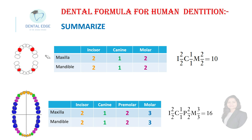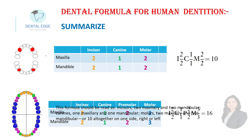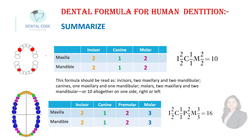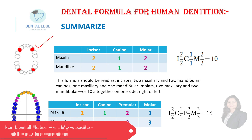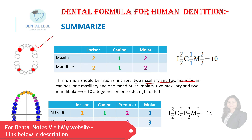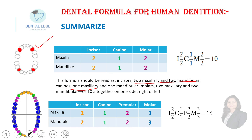One more thing — how do we read this formula? For the primary dentition, this formula should be read as: incisors, two maxillary and two mandibular; canines, one maxillary and one mandibular; molars, two maxillary and two mandibular — or ten teeth altogether on one side, either right or left.